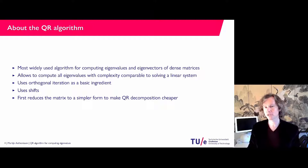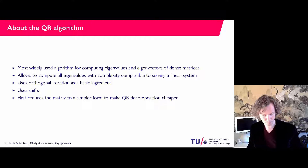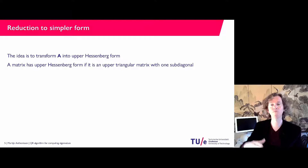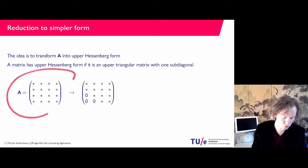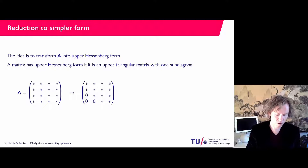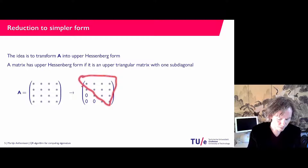We use Givens rotations, which we looked at in a previous video when computing the QR decomposition, to transform our matrix into upper Hessenberg form. Upper Hessenberg form is upper triangular with one extra lower diagonal. So starting from a general 4×4 matrix where the star means any non-zero entry, we use Givens rotations to transform it into a form that is upper triangular plus one extra lower diagonal — that is upper Hessenberg.